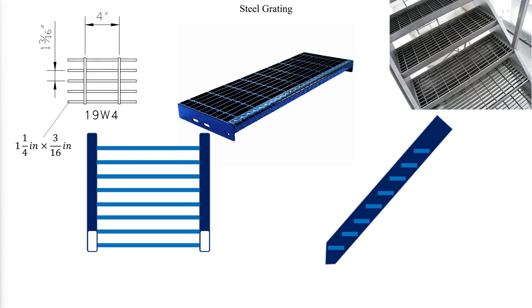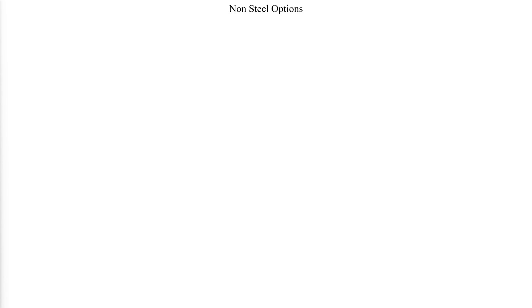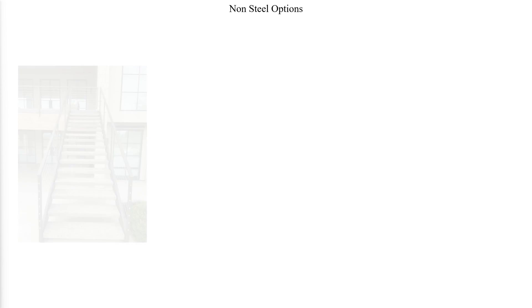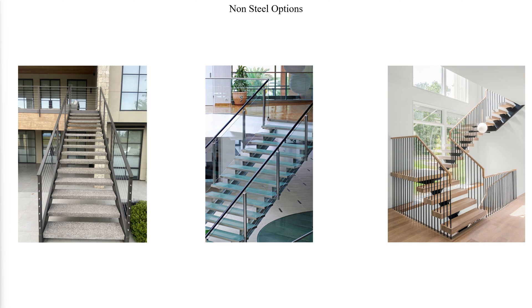Standard grating treads are made from 1.25 inch by 3/16 inch serrated grating with bent checkered plate nosing. For non-steel options such as precast concrete, glass, or wood, refer to the appropriate design standard or information provided by the component supplier. Designers should consider how non-steel options will interact with steel stair elements — for example, wood expansion or contraction when directly attached to a steel bar. Tolerances and applied forces from non-steel components should also be reviewed.